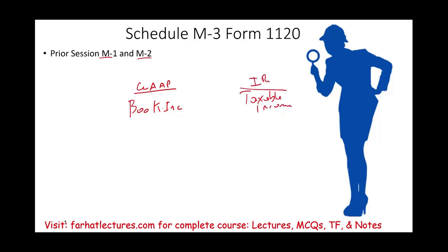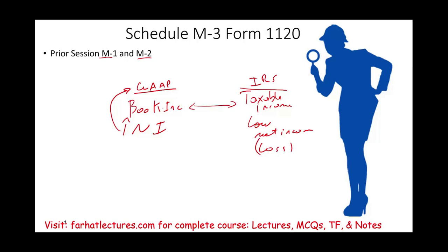What is taxable income? It is income under the IRS rules. The IRS is interested in learning why you might have high net income for GAAP purposes, but when it comes to taxes, you have low net income or even a loss. Their concern is: why the discrepancies? That's basically what Schedule M1 is.